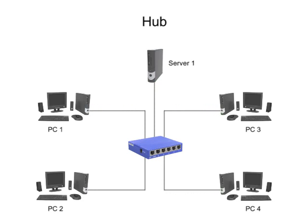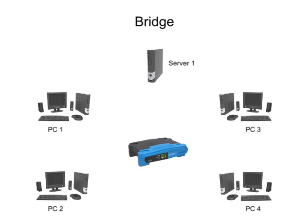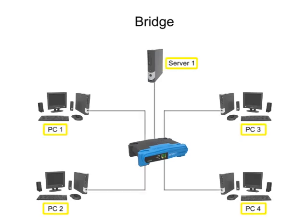Another network backbone device is called a bridge. Network bridges are smart devices that process and record information about signal traffic between devices in the network. The bridge then uses this information to determine the most efficient path for data transfer between a transmitting and a receiving device, without having to send it to every device in the network.